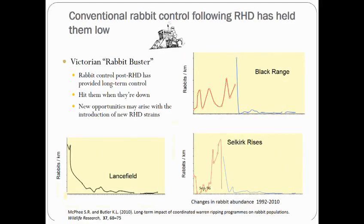Nevertheless, the introduction of RHD did create a great opportunity for long-term rabbit control. It has always been a standard for rabbit control that it works best when other naturally occurring situations have reduced rabbit populations or their reproductive capacity — hit them when they're down. In those areas where widespread ripping programs were enacted after the immediate spread of RHD, rabbit numbers have been heavily suppressed for extended periods.